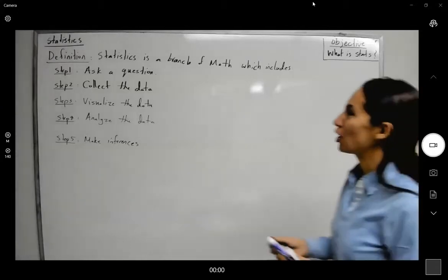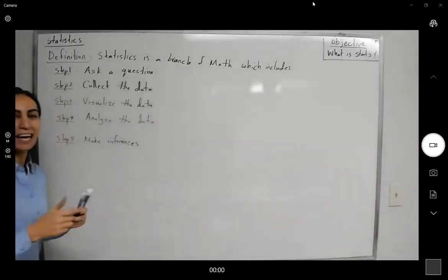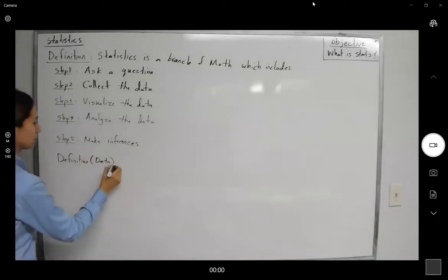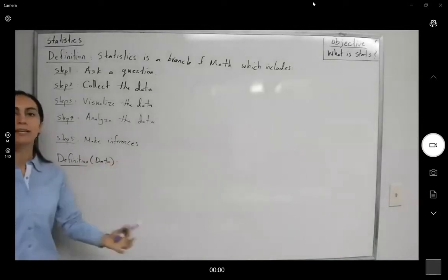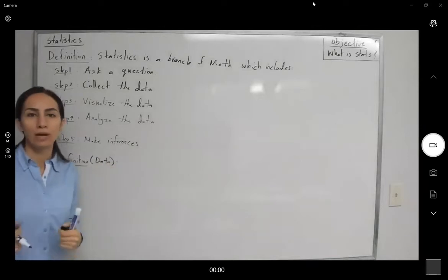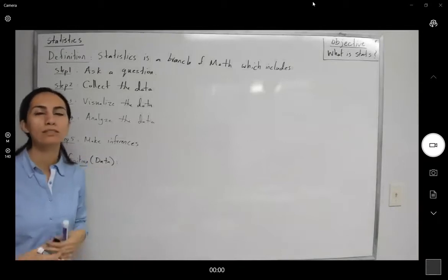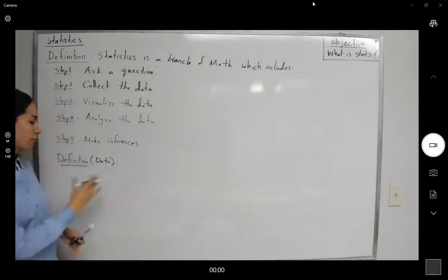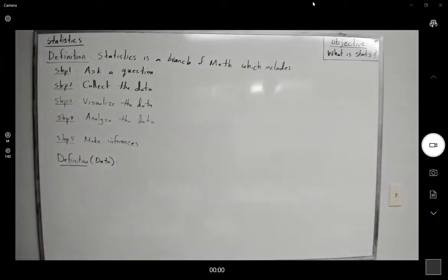So when you're talking about data, definition of data, we are actually taking into account all possible counts, qualities, quantities, numbers. So officially we say that data consists of information.